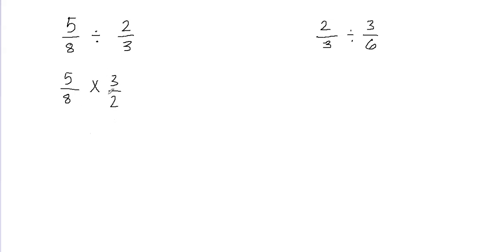Now the second step is to multiply both fractions. So let's multiply them. 5 times 3 will be 15, and 8 times 2 would be 16. We're done multiplying the fractions.